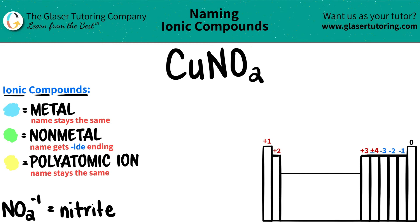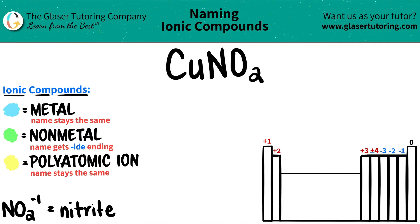Today we are going to be naming the ionic compound CuNO₂. Here's a little trick: if you see that you have three or more different elements in your compound, you know that you're going to be dealing with at least one polyatomic ion.